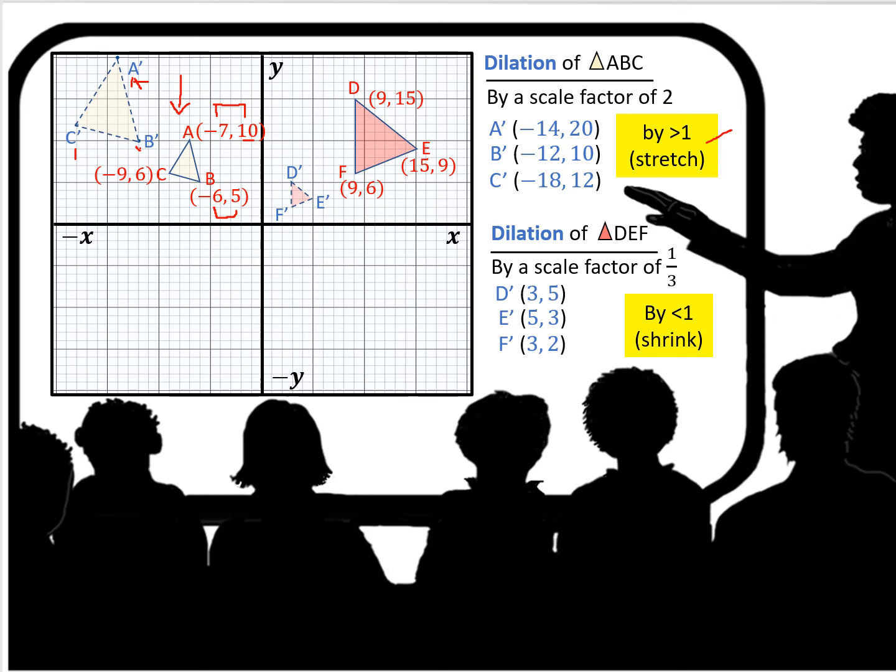Now let's look at dilation of the red triangle DEF. Now we're over here. In this case, the scale factor is 1 third. So that tells you since it's less than 1, we're going to shrink the figure. So how do we do that? We are going to divide each of the xy coordinates of the three points that we have, each of those coordinates, by 3. So for D, it would become 3 and 5. So our D prime is going to be at x 3, y 5.